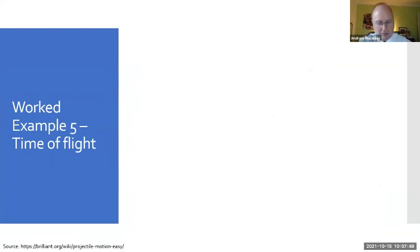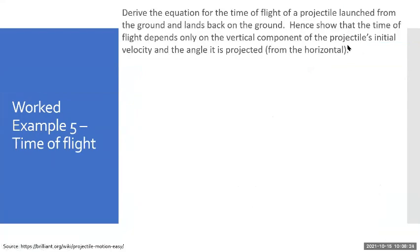So let's have a look at worked example five. Remember, get out pen and paper so you can start writing this down. Derive the equation for the time of flight of a projectile launched from the ground and lands back on the ground. Hence show that the time of flight depends only on the vertical component of the projectile's initial velocity and the angle it is projected. You do have to in physics be able to derive equations. You do have to be able to manipulate algebraic formulas and substitute and rearrange to find different answers.